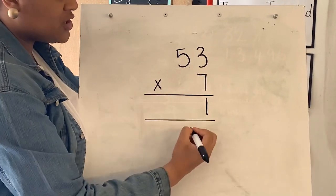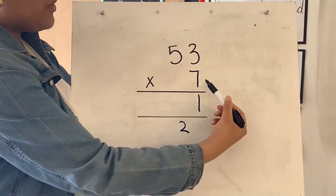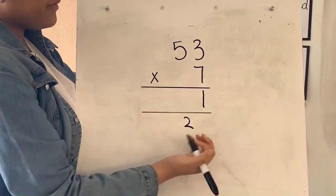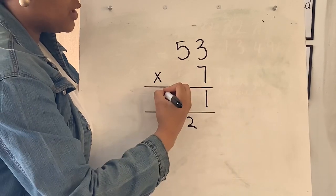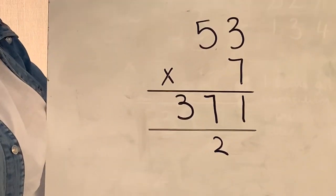Moving on, you're going to do 7 times 5 which is 35, add the 2 that we've exchanged which is 37. So our answer is 371.